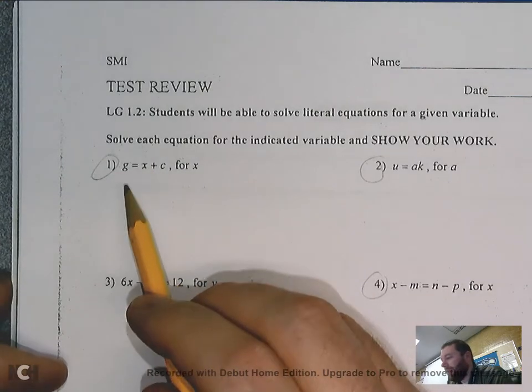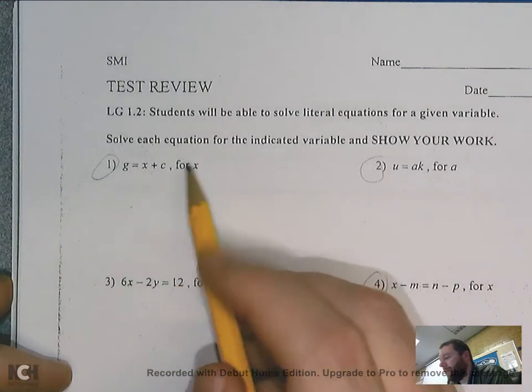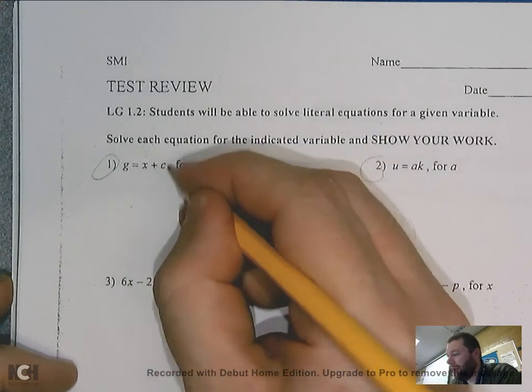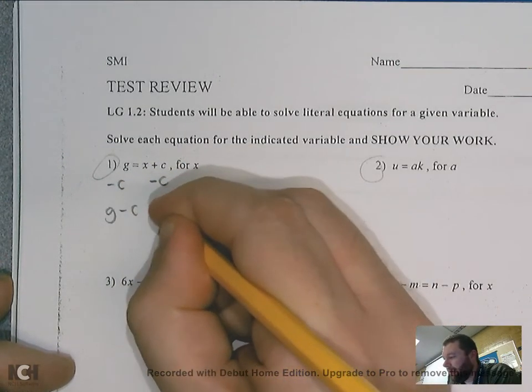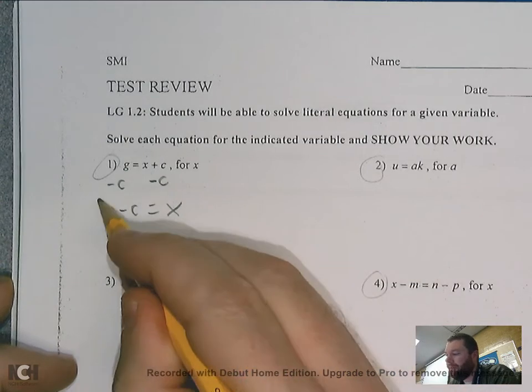So number one, it wants me to solve for x. So I have g = x + c. I need to get rid of that plus c. So I would minus c to each side, which would give me g minus c is equal to x. The x is by itself, so I'm done.